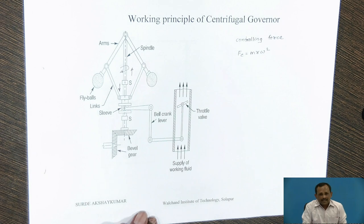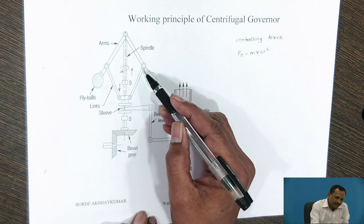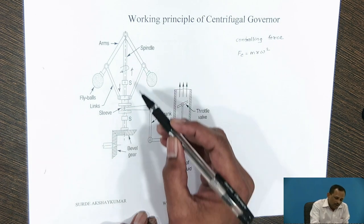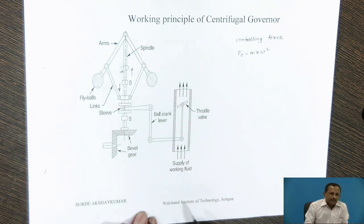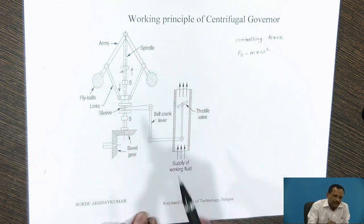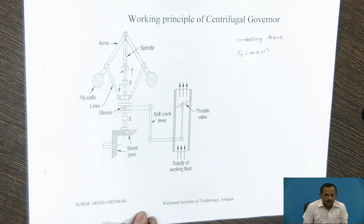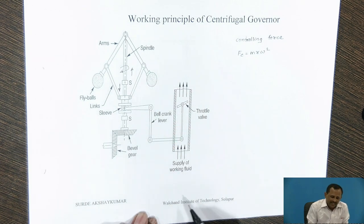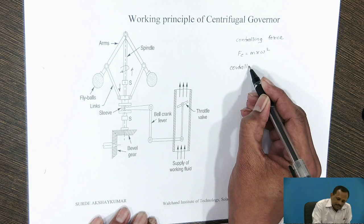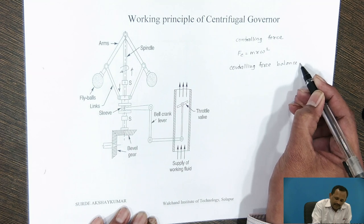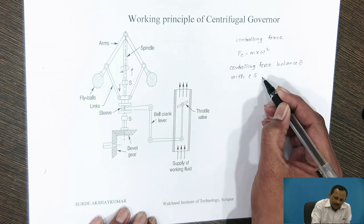Think for a while: in case of centrifugal governor, which is the parameter used in order to control the action of the centrifugal governor? In case of centrifugal governor, the action of the governor is controlled by the gravity action. Also, when the balls are rotating at uniform speed, the controlling force is balanced with the centrifugal force acting on the balls.